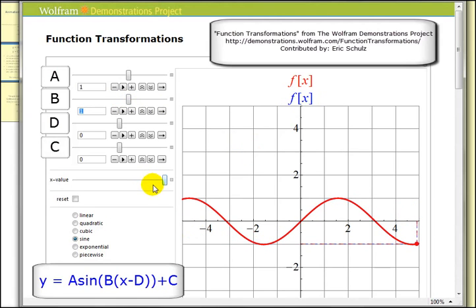Next, let's take a look at what happens when we change the value of C. And we see it's a vertical shift up if C is positive, or down if C is negative.